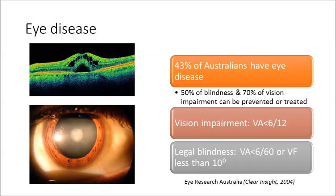The statistics are actually a little bit worse now, 10 years down the track. We define vision impairment as visual acuity of less than 6/12, and legal blindness is defined as visual acuity of less than 6/60 and/or a visual field of less than 10 degrees. These are how the terms will be defined for the purposes of this module.